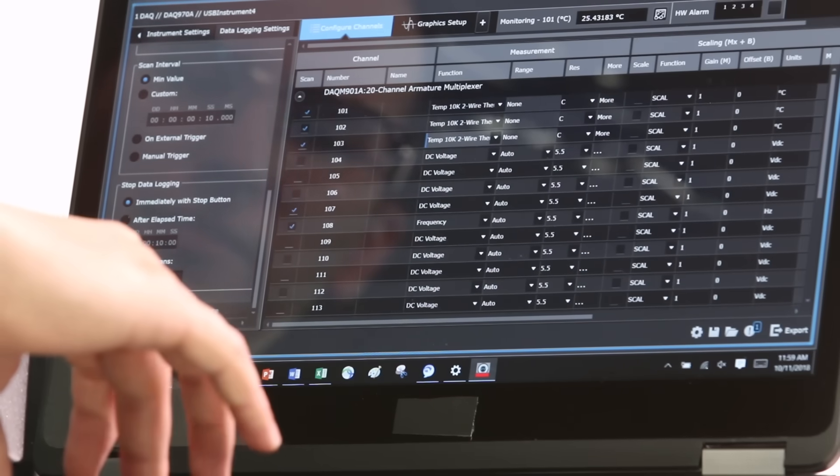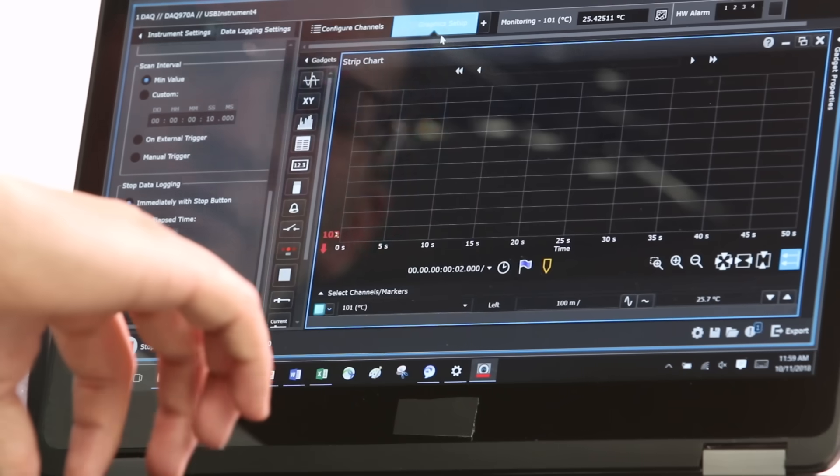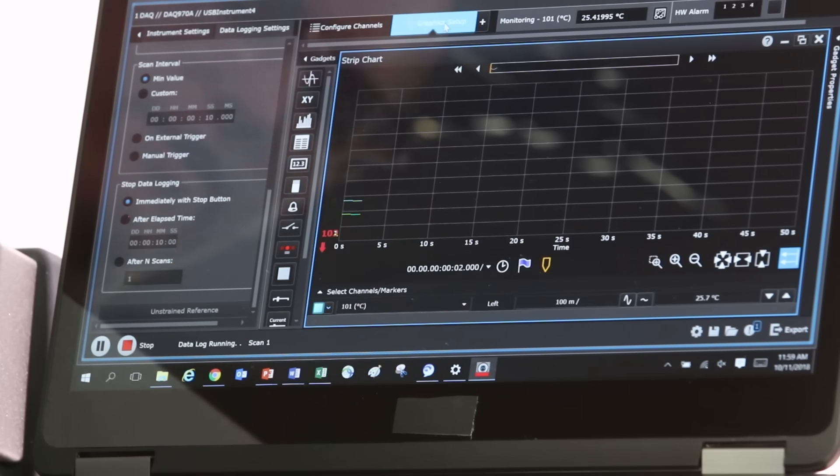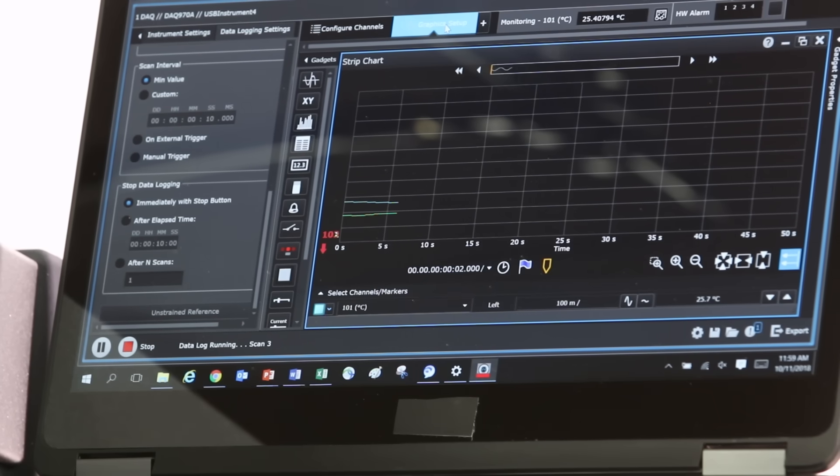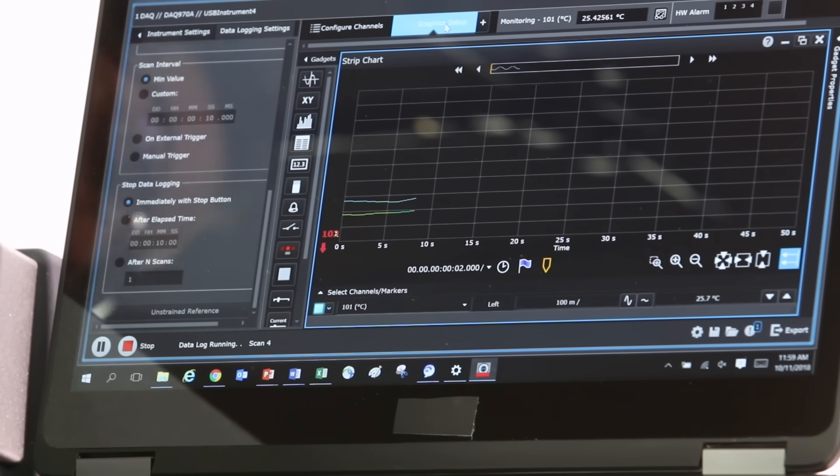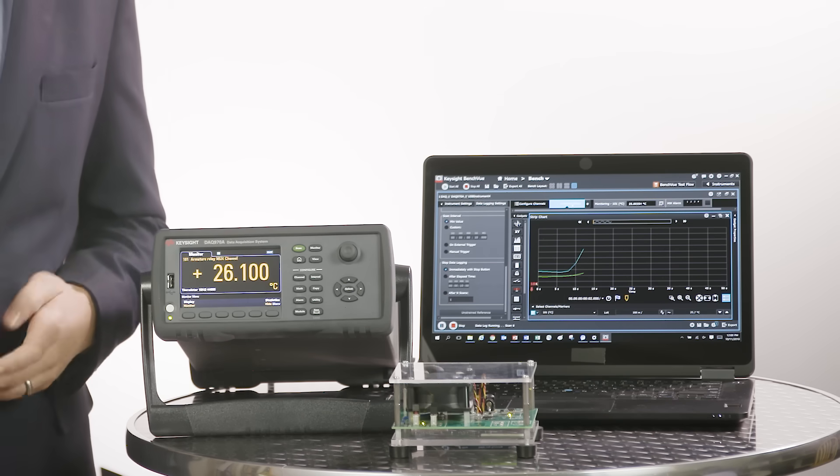I'm gonna hit start in BenchVue and I'm gonna switch over to my graphics setup so I can watch it running. We can hear my relays clicking and I'm gonna turn my system on. We'll be able to see the temperature start to rise as my system runs without any fan. We're gonna give it a second and turn on the fan and see what happens.